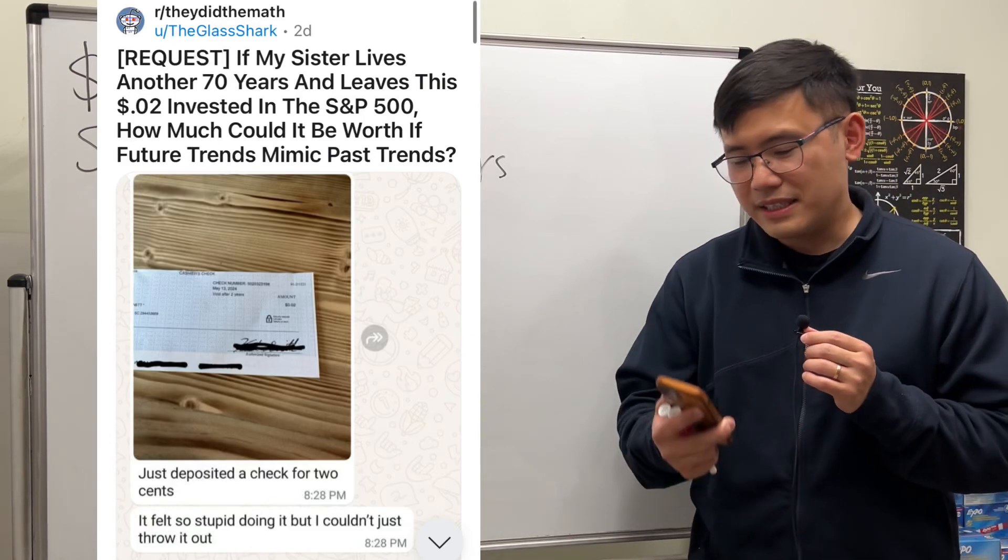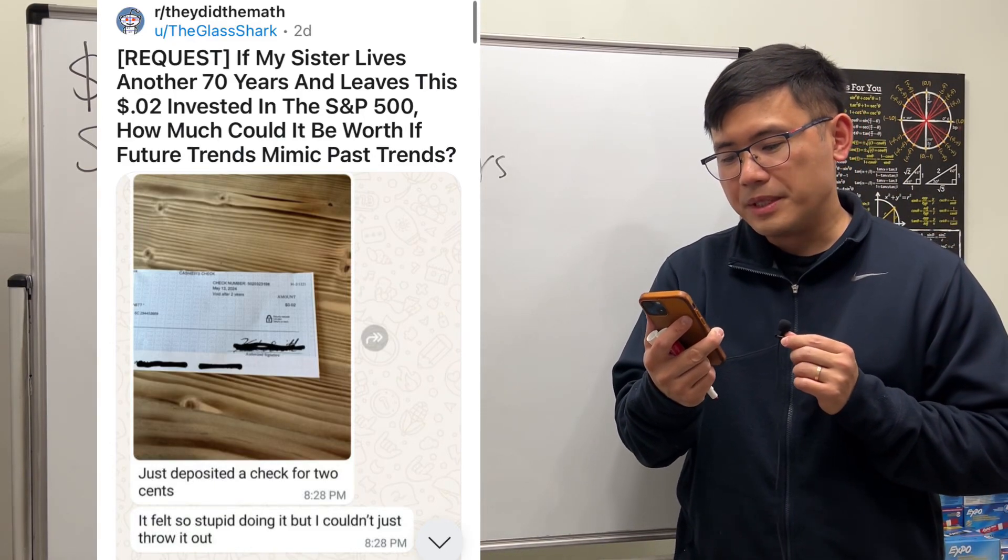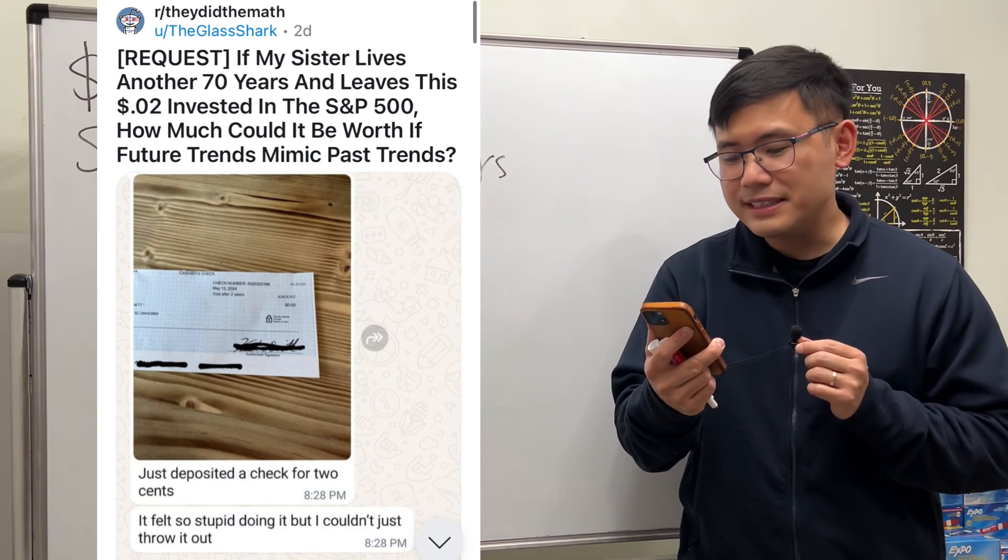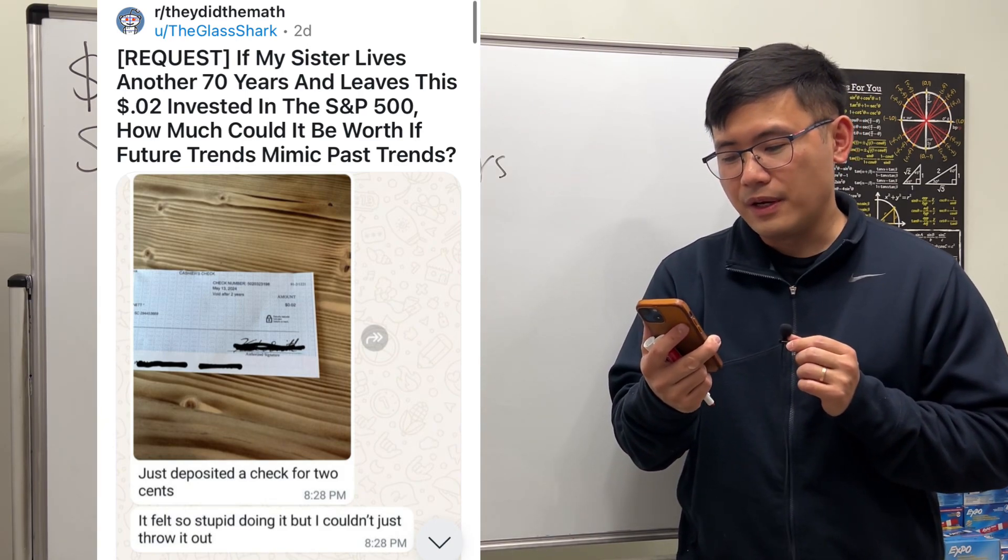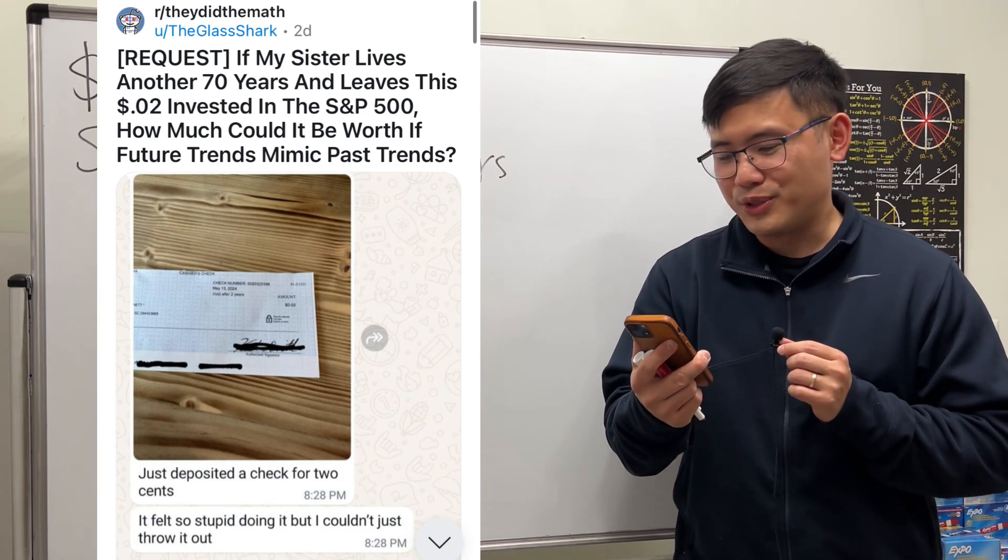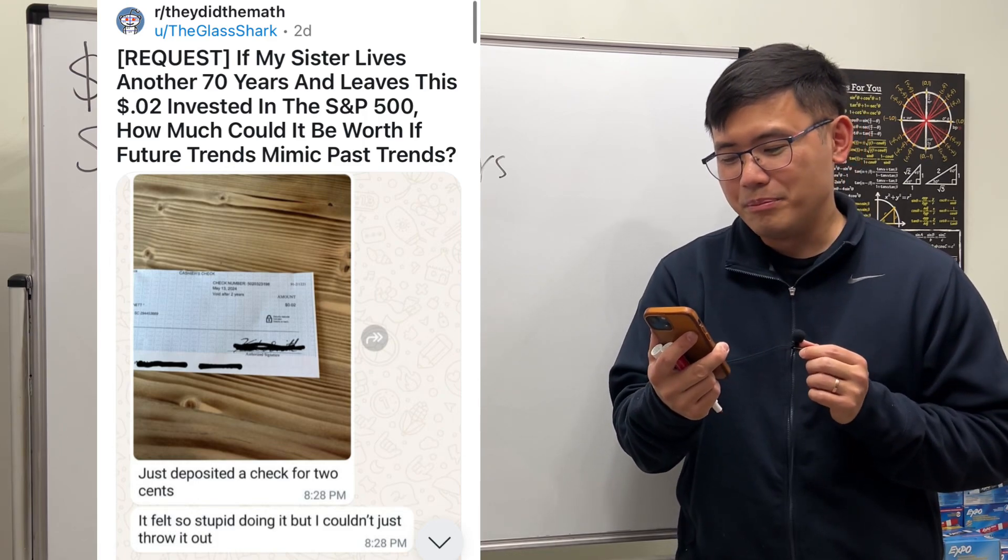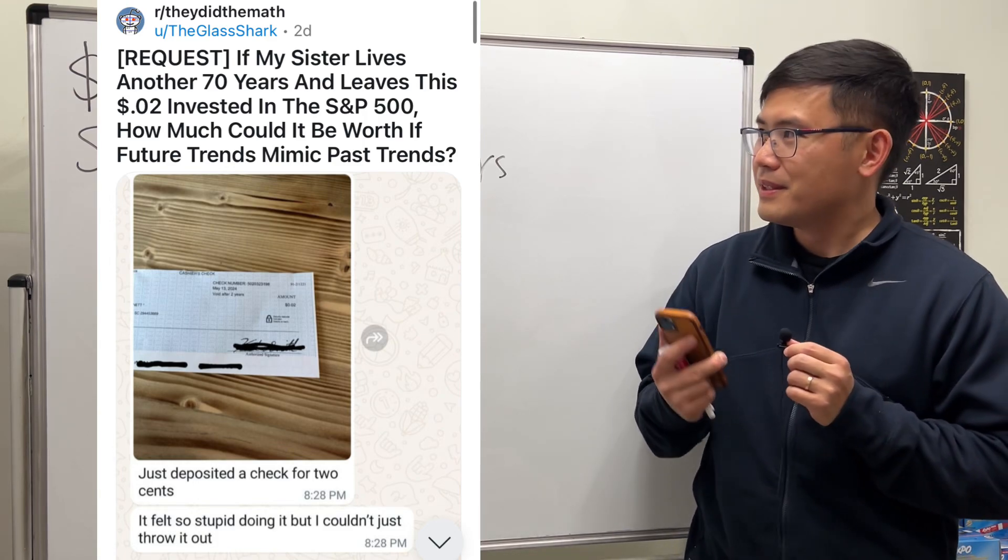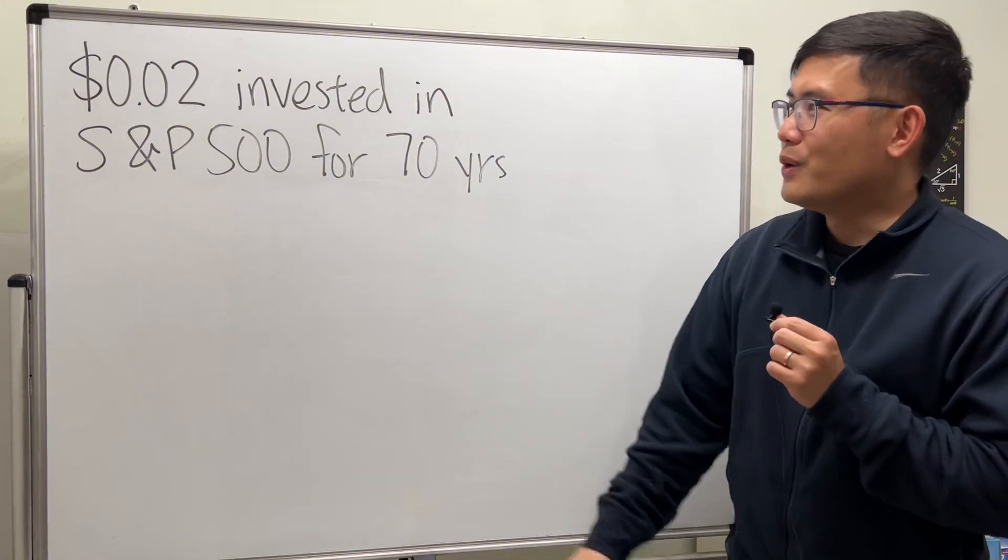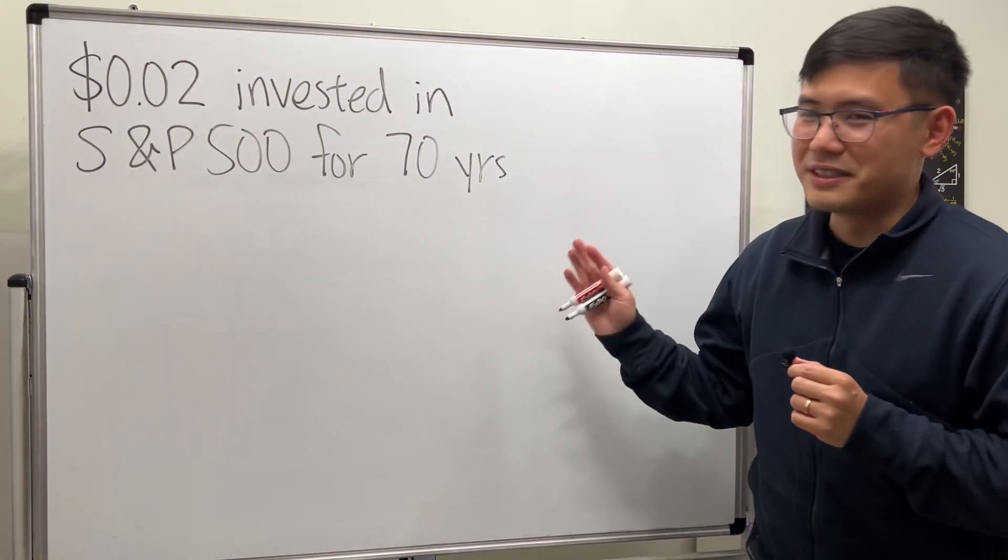So I just saw this on Reddit. It says if my sister lives another 70 years and leaves this two cents invested in the S&P 500, how much could it be worth if future trends match past trends? Okay, let's figure it out. Keep in mind though, we only have two cents, so this right here is going to be fun.